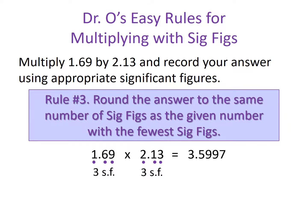Rule number three says we round our answer to the same number of significant figures as the given number with the fewest significant figures. Since both given values have three significant figures, our solution should have three. Our answer of 3.5997 has five significant figures, so we round to 3.60, which has three significant figures. The trailing zero counts because of the presence of the decimal in the number — this is why 3.60 has three significant figures, not just two.